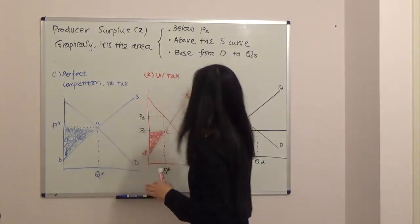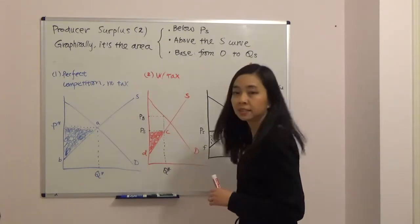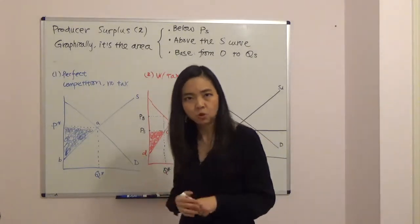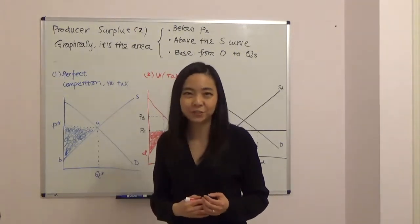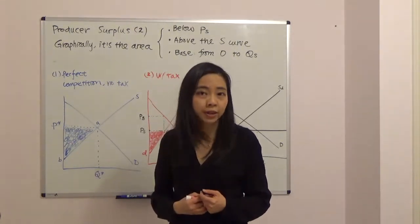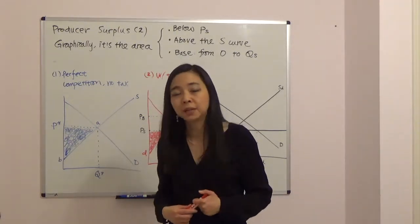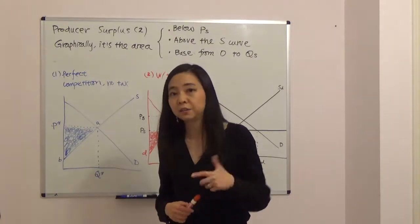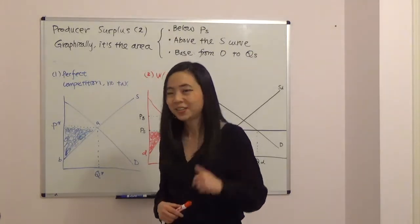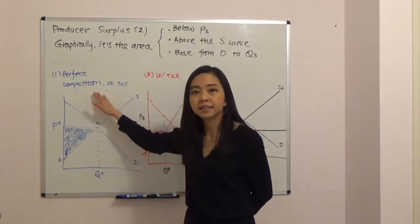The base of the triangle — and it's typically a triangle, but sometimes producer surplus can be a trapezoid — is from zero to the quantity supply in the market. Sometimes quantity supply is not equal to quantity demanded, depending on whether there's international trade. In particular, if there are imports, then local quantity supply will be smaller than local quantity demanded, and the difference will be the imports.